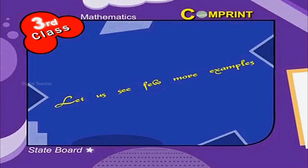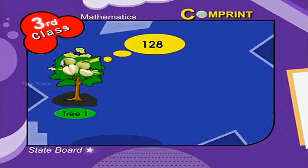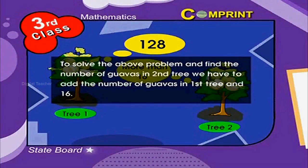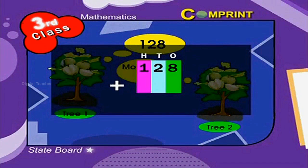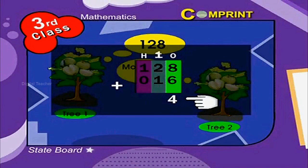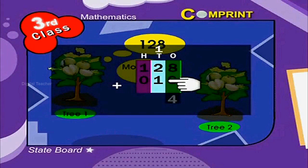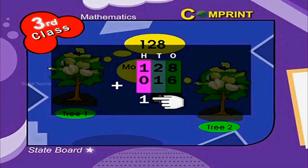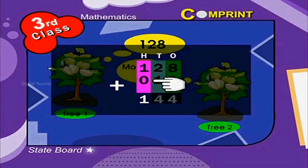Let us see a few more examples. One guava tree has 128 guavas. Another guava tree has 16 guavas more than the first tree. How many guavas are there in the first and second trees? To find the number of guavas in the second tree, we add 128 plus 16. Eight plus six is equal to 14. Then one plus two plus one is equal to 4. In the hundreds place, one plus zero is equal to 1, since there is no digit in the hundreds place for 16, we write 0 there. So the answer is 144.